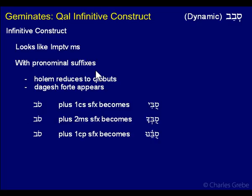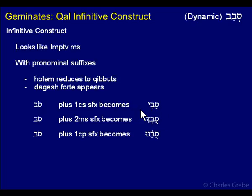Now with pronominal suffixes, the holem reduces to kibbutz, and a dagesh forte appears. So we have 'sov', and if you add the 1cs suffix, it becomes 'subi'. The holem has reduced to a kibbutz. We need to be aware of this so that you recognize it, otherwise it may look like something very different. The dagesh forte appears because we now have a suffix.